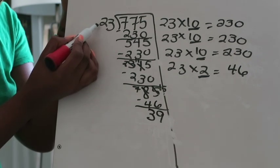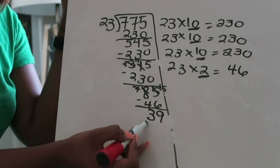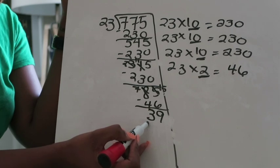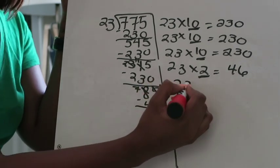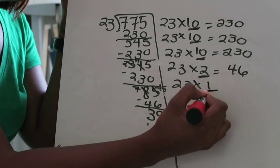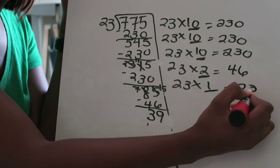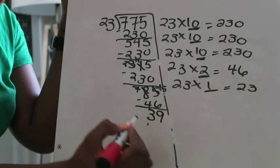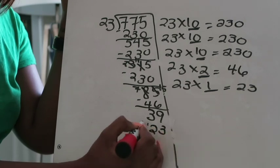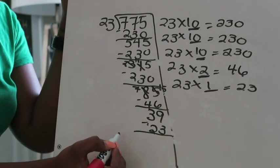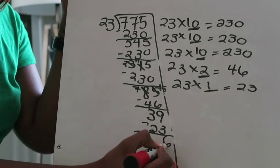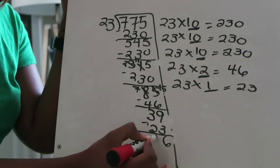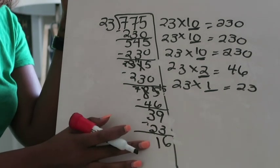Now you can't take 23 and multiply it by 2 and subtract because it would be too high. So I'm going to do 23 times 1. Underline that 1. 23 times 1 is 23. Subtract 23 from 39. 9 minus 3 is 6, 3 minus 2 is 1, and I'm left with 16.